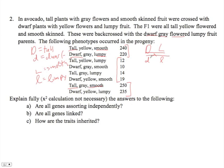So are the genes assorting independently? Well, yes. Flower color is. So on a separate chromosome, you'll have your yellow and your gray, just like this. Are all genes linked? Not all genes. Only D and L.